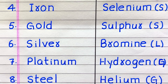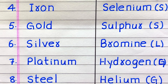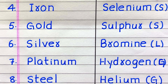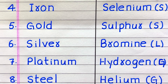Among the non-metals, selenium and sulfur are in solid state at room temperature. Bromine is a liquid, whereas hydrogen and helium are gases.